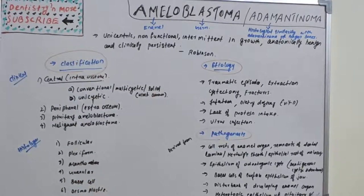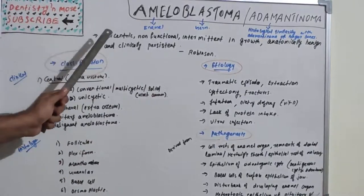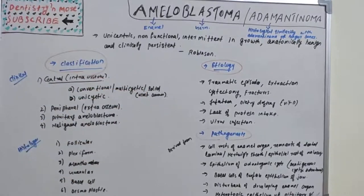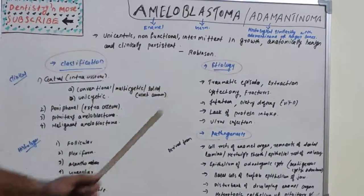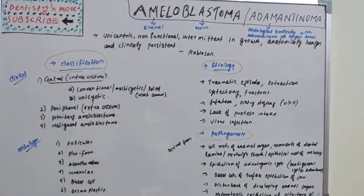Robinson defined ameloblastoma as: unicentric, non-functional, intermittent in growth, anatomically benign, and clinically persistent — a unicentric, non-functional, intermittent in growth, anatomically benign, and clinically persistent tumor.